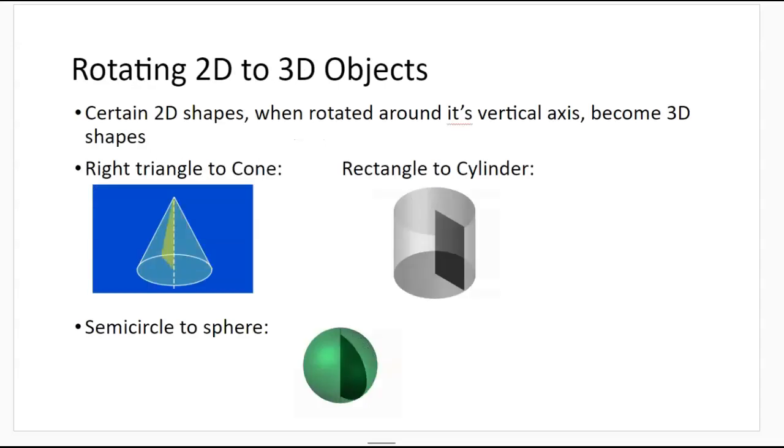I'm going to move on to rotating 2D to 3D objects. Certain 2D shapes, when rotated around their vertical axis, become 3D shapes.